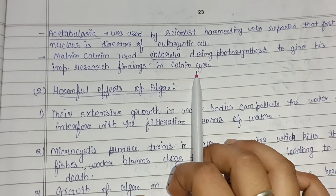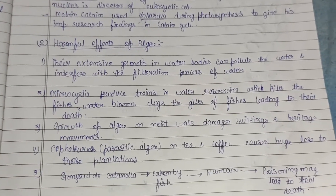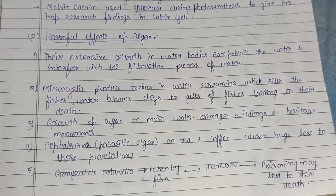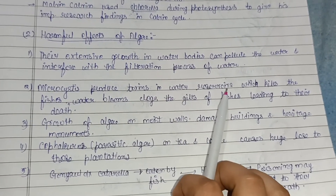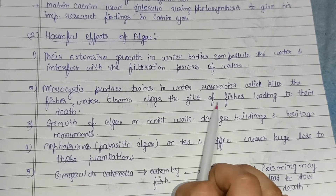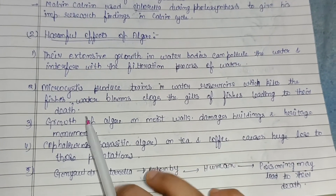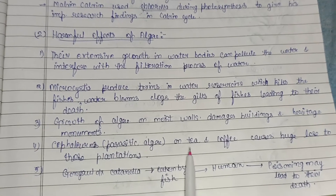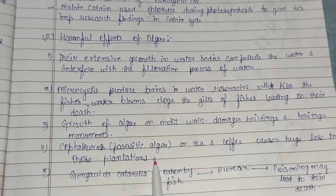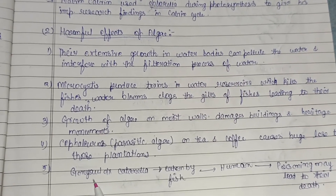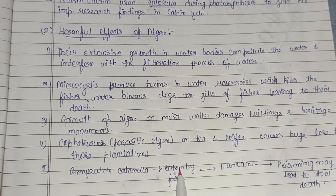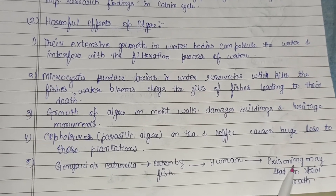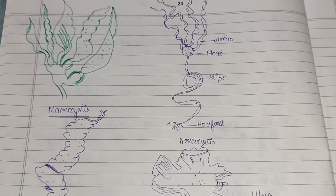The harmful effects of algae include: their extensive growth in water bodies pollutes water and interferes with filtration. Microcystis produces toxins in water reservoirs, killing fishes, and water blooms clog the gills of fishes, leading to death. Algae growth on moist walls damages buildings and heritage monuments. Cephaleuros is a parasitic algae causing huge loss to tea and coffee plantations. Gonyaulax catenella produces toxins that fish ingest, which can poison and kill humans who consume those fish.